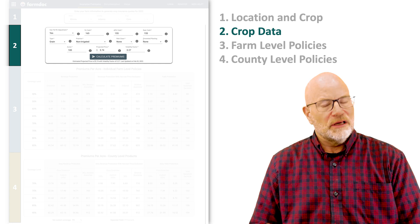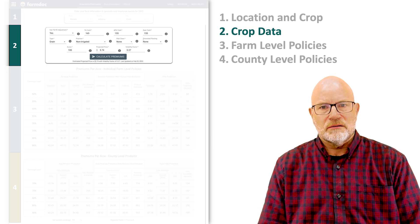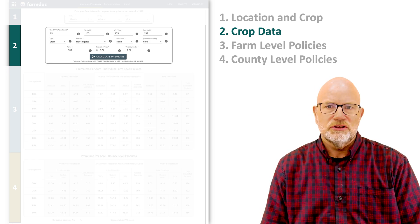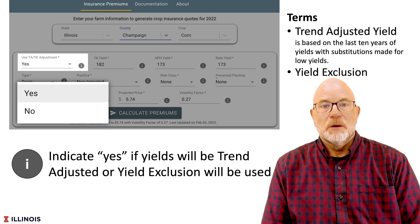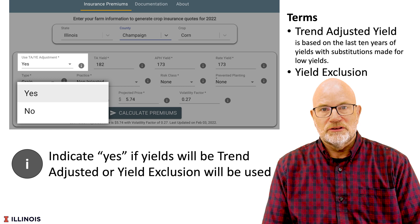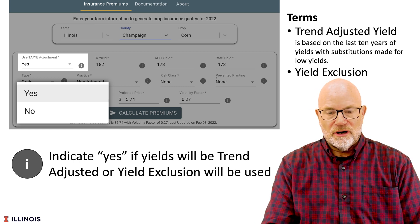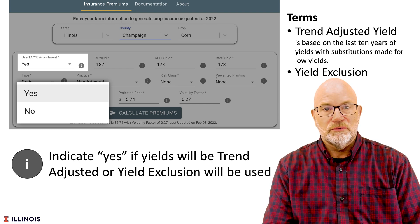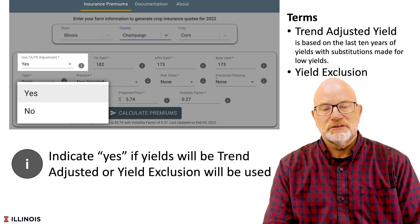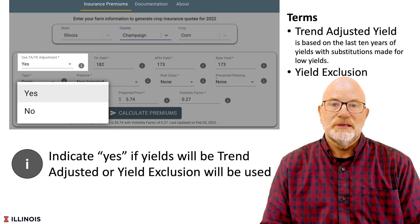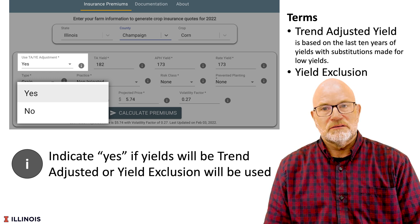We give defaults for all this information, so if you want to do just a quick quote for our county, just use our defaults. The first option is trend adjustment. Most people use the trend adjustment, which increases the guarantee yield for a crop. We also have a yield exclusion option, but most people use the trend adjusted yield, so in most cases that answer will be yes.